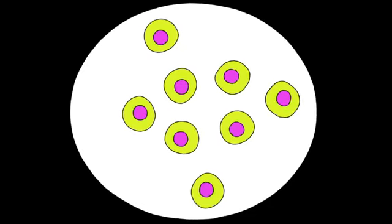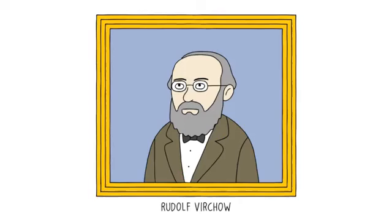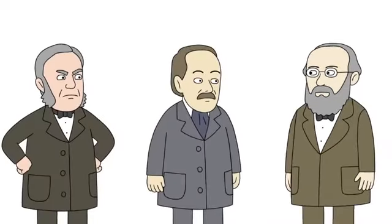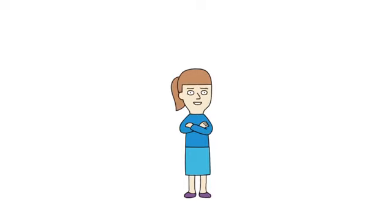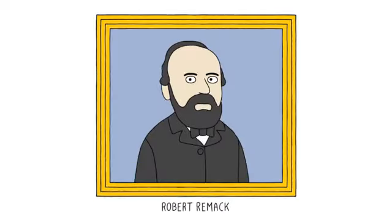That's when another scientist named Rudolf Virchow stepped in with research showing that cells did come from other cells. Research that was actually, how to put it, borrowed without permission, from a Jewish scientist by the name of Robert Remack, which led to two more feuding scientists.